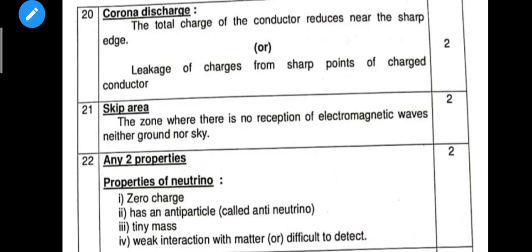Next question: the total charge of the conductor reduces near the sharp edge — that is 2 marks. We can use: leakage of charges from the sharp points of the charged conductor.